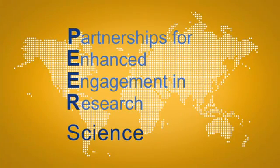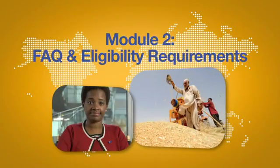Hello, my name is Deandra Beck and I'm a Program Director at the National Science Foundation. Welcome to the third module in the Peer Science Program. By now, I hope you've had a chance to look at Module 1, which is an introduction to the Peer Program, and Module 2, which goes over some of the eligibility requirements for the program. In this module, we are going to discuss how you can identify a new partner in the United States who has an active NSF award. So let's begin.